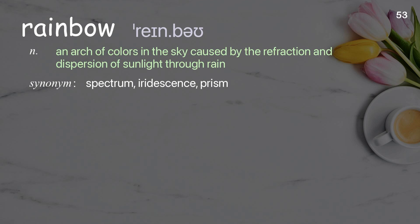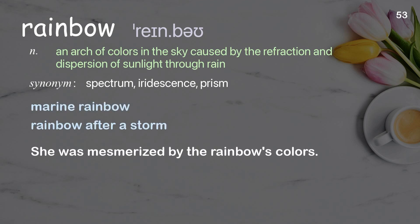Rainbow: an arch of colors in the sky caused by the refraction and dispersion of sunlight through rain. Examples: marine rainbow, rainbow after a storm. She was mesmerized by the rainbow's colors.